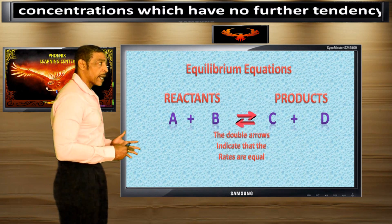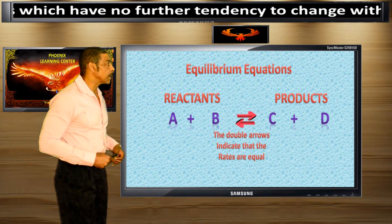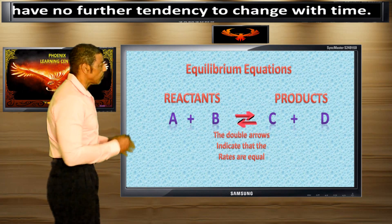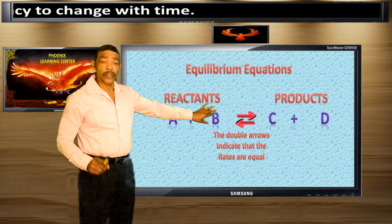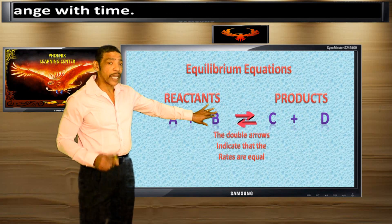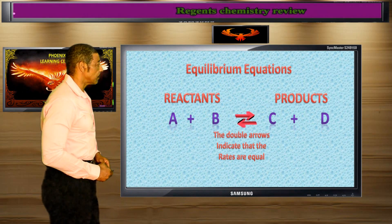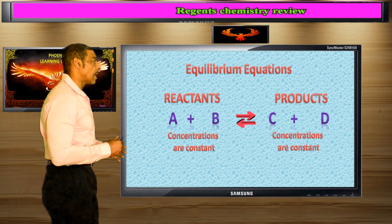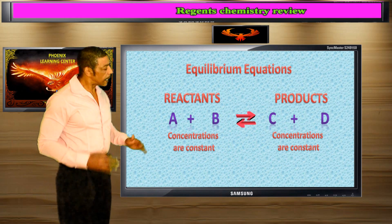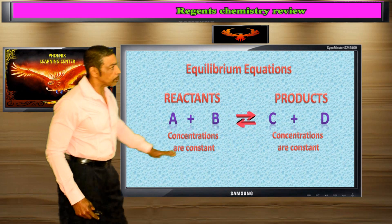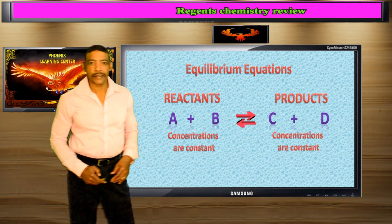An equilibrium reaction may be recognized by the presence of double arrows, meaning that the forward and reverse reaction rates are equal, and the concentration of the reactants and the products will remain constant.